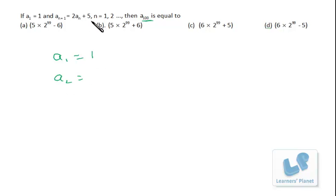Now a₂ will be 2a₁ plus 5. Suppose I put n equal to 1, then it will be a₂. So it will be 2a₁ plus 5. Since a₁ is 1, so 2 plus 5 equals 7.